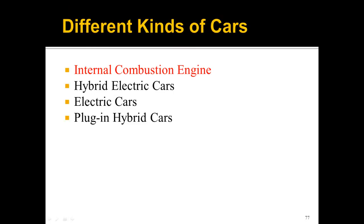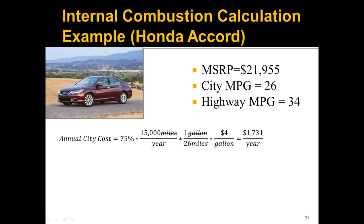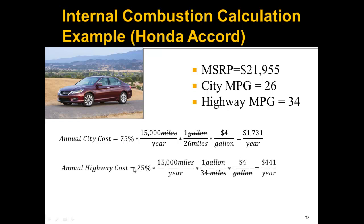Let's look at an internal combustion calculation example using the Honda Accord. It retails for $21,955, with city miles per gallon of 26 and highway miles per gallon of 34. For city cost: 75% of 15,000 miles per year divided by 26 MPG times $4 per gallon gives $1,731 per year. For highway cost: 25% of 15,000 miles per year at 34 MPG gives $441 per year. The total annual fuel cost is $2,172 to drive the Honda Accord.